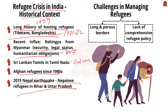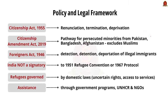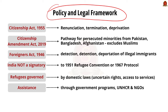India's long and porous borders with neighboring countries, combined with the lack of a comprehensive refugee policy, have made it challenging to manage the influx of refugees. Regarding policy and legal framework: the Citizenship Act 1955 provides provisions for renunciation, termination, and deprivation of Indian citizenship. The Citizenship Amendment Act 2019 seeks to provide a pathway to citizenship for persecuted Hindu, Christian, Jain, Parsi, Sikh, and Buddhist immigrants from Bangladesh, Pakistan, and Afghanistan, though Muslim immigrants from these countries are excluded.